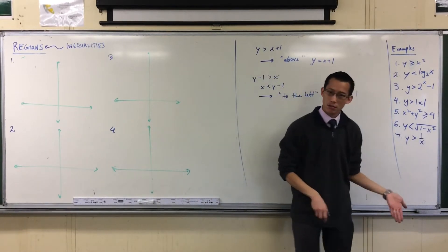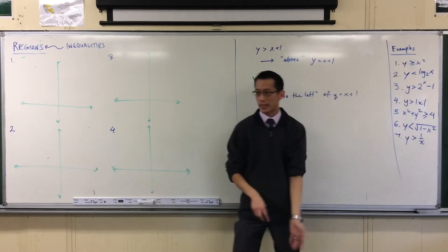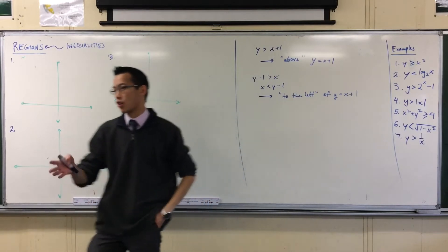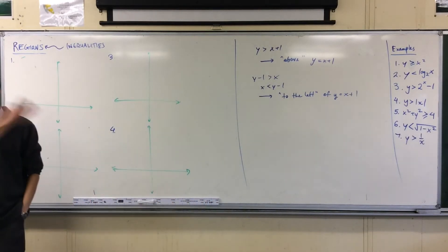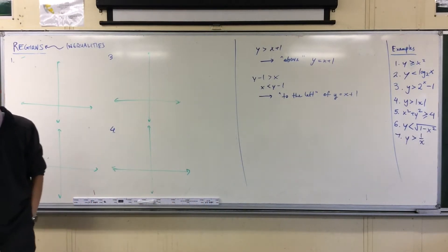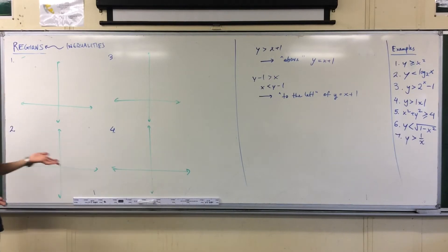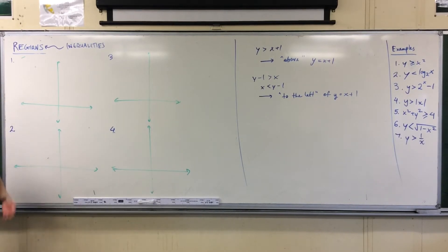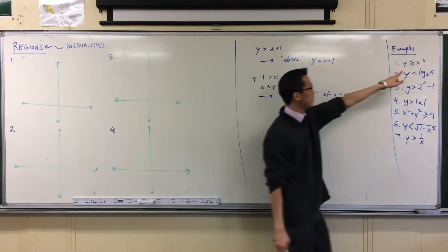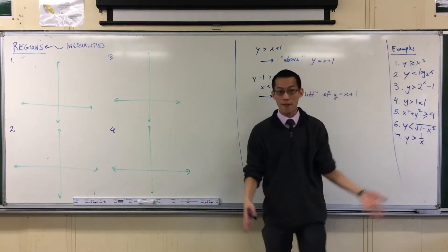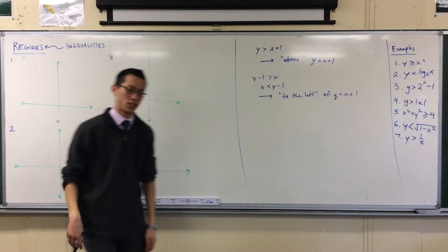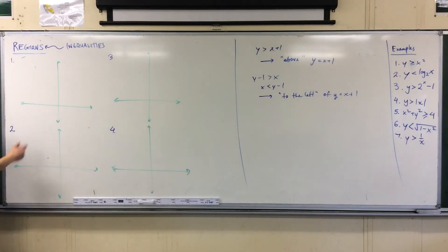The first thing you should always do is go from an inequality to identifying that the corresponding boundary is its equation. So y is greater than or equal to x squared. I'm going to draw in y equals x squared. Now, this one includes the boundary, it's inclusive of the boundary, so I'm just going to do a solid line, just like you would do a filled circle.